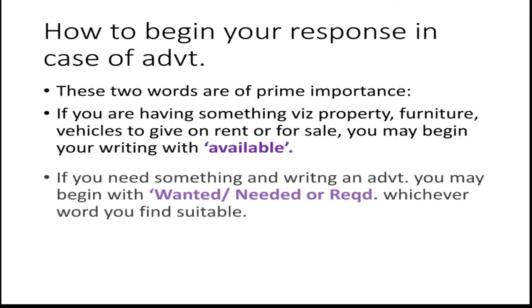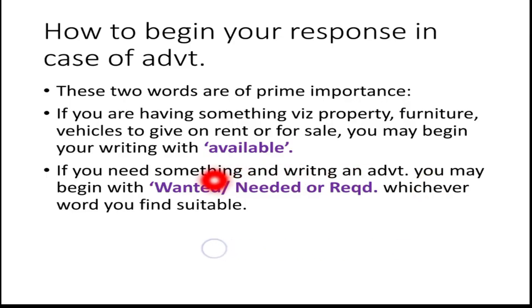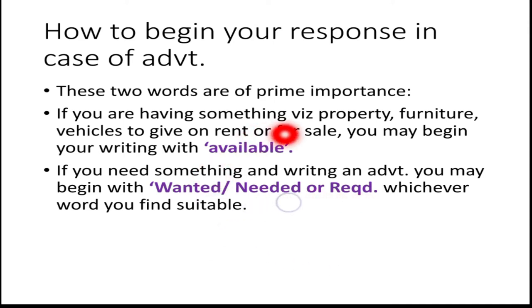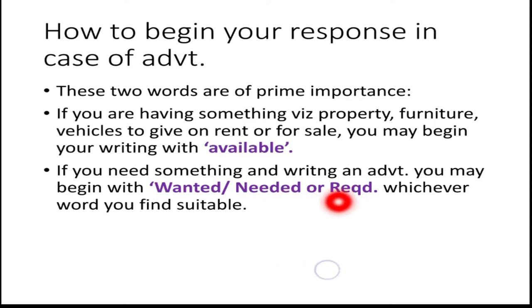How to begin your advertisement: two words are very important — 'available' and 'wanted' (or 'needed' or 'required', they mean the same). If you have something — especially property, furniture, or a vehicle — to give on rent or for sale, it means it is available with you, so begin your advertisement with the word 'available'. If you need something, then you will begin your advertisement with the word 'wanted', 'needed', or 'required', whichever seems suitable.